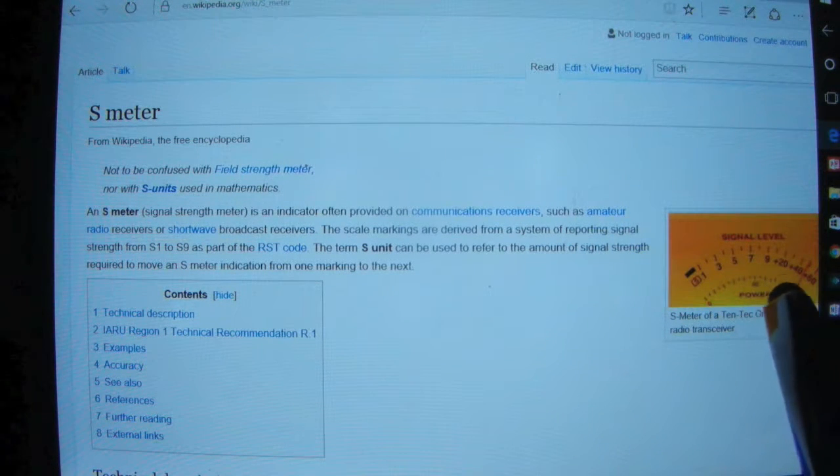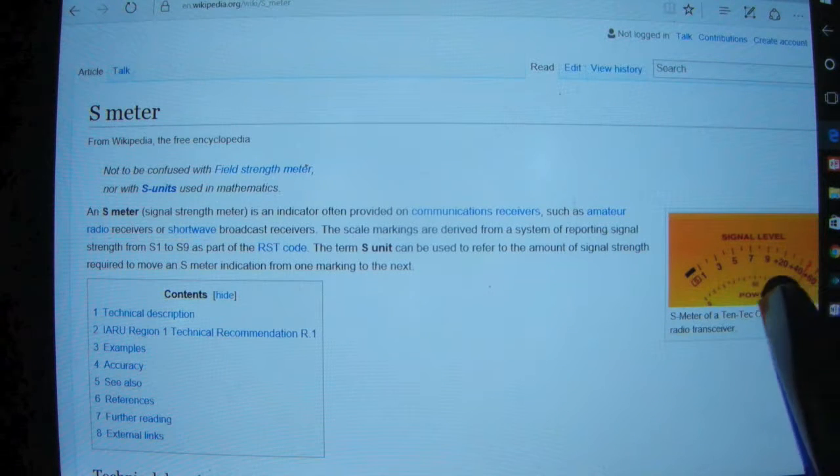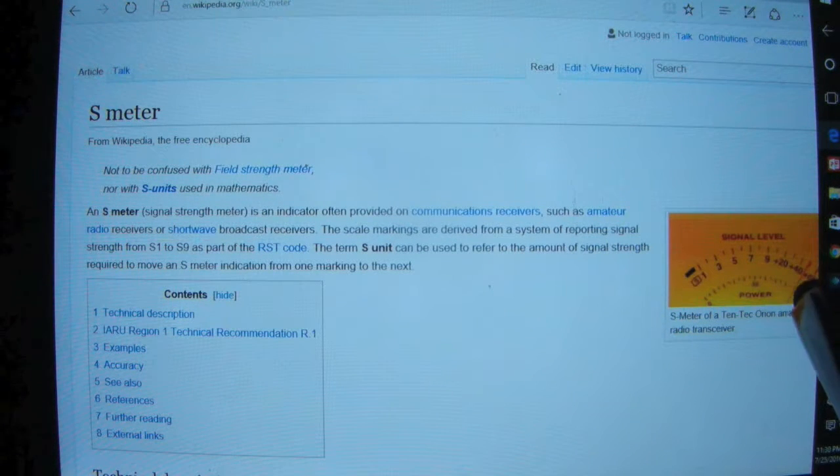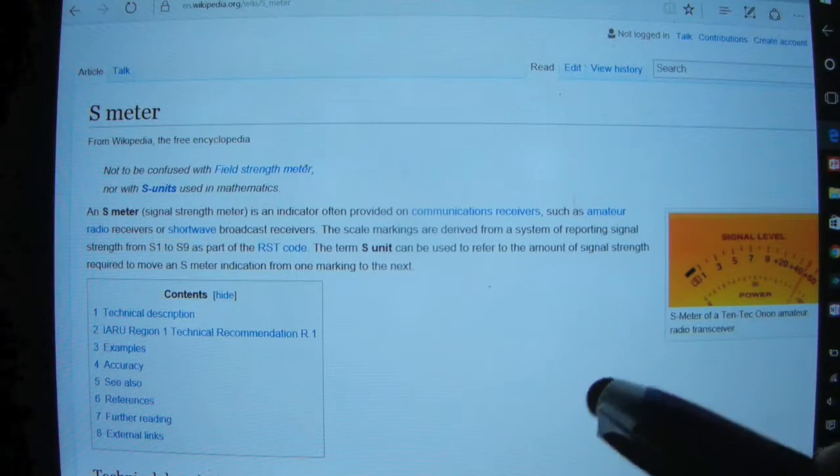And these units here are called S-units. You've got numbers along the bottom. And something like an S-9 would be stronger signal than an S-5. And something with S-9 plus 40 would be stronger than an S-9 by 4 decibels.